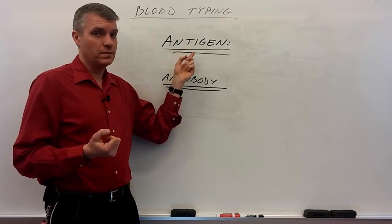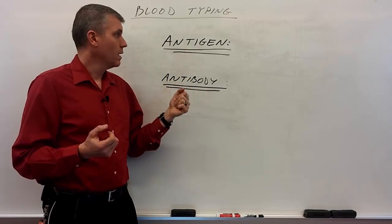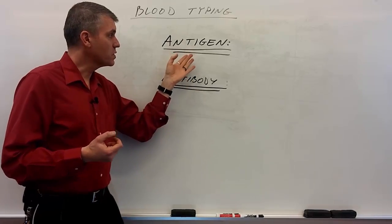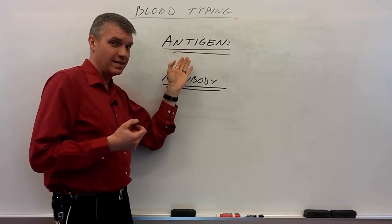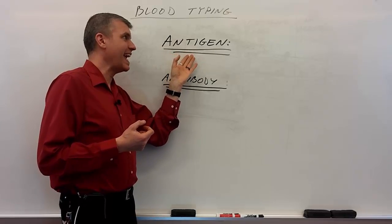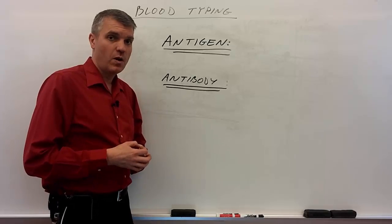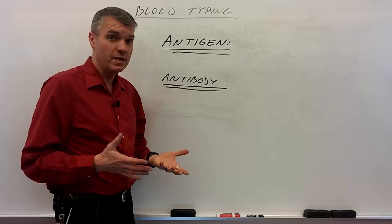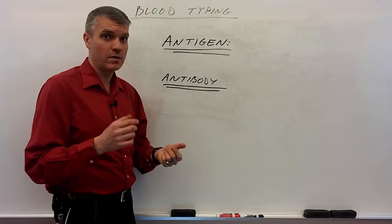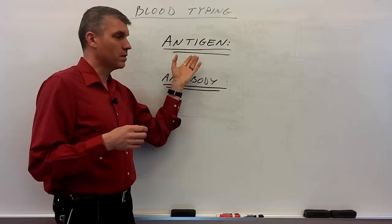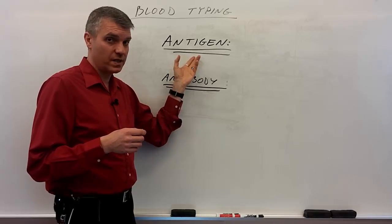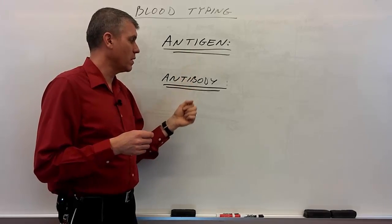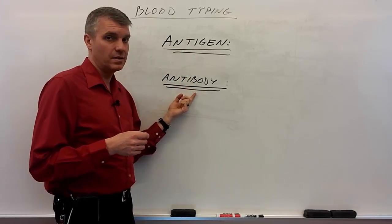The first term is antigen. An antigen is a very small particle, usually a glycoprotein or a protein, but it could be any small particle with the right shape. This particle is capable of causing an immune reaction, and that immune reaction usually involves the production of antibodies.